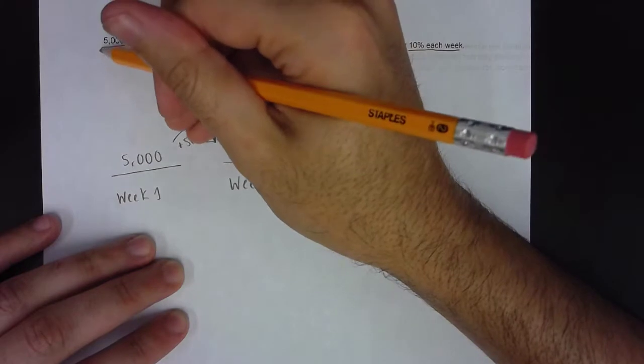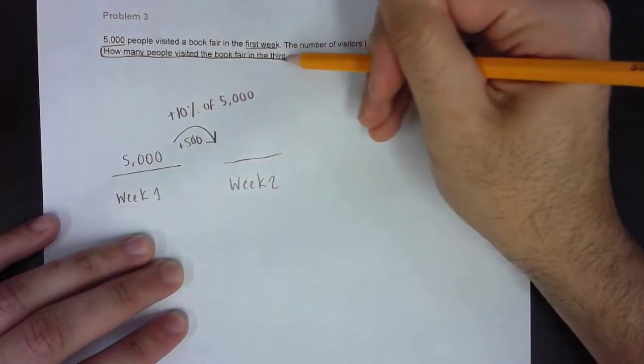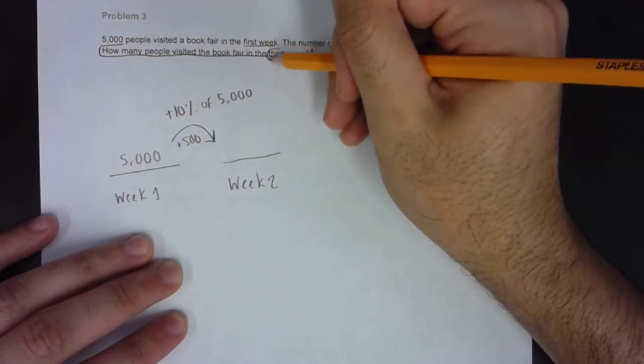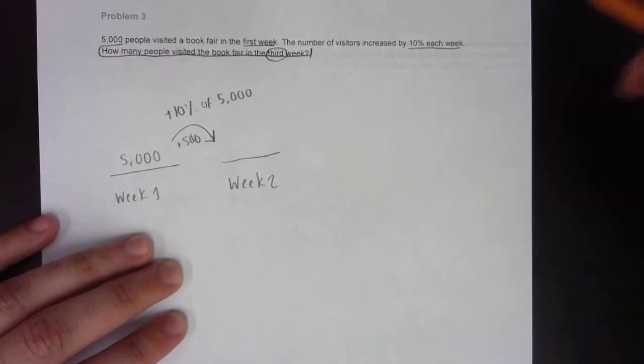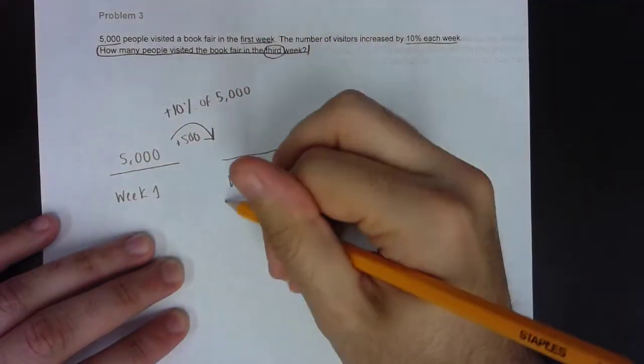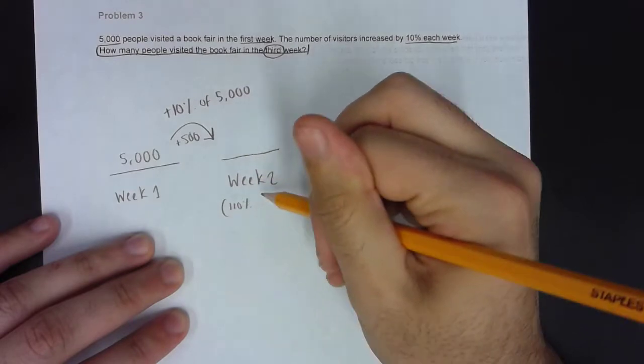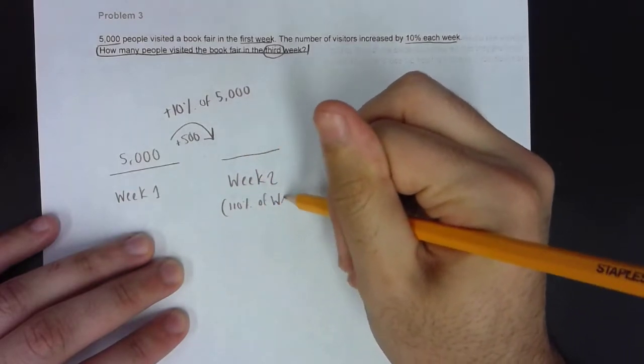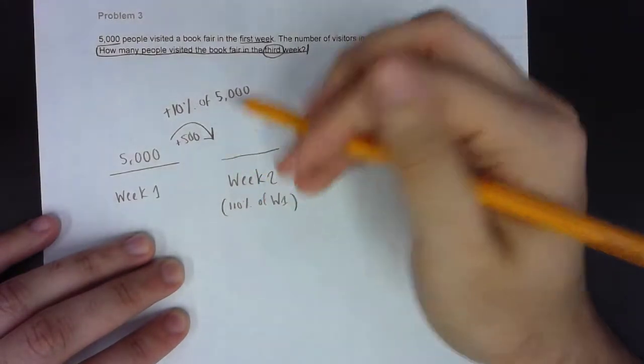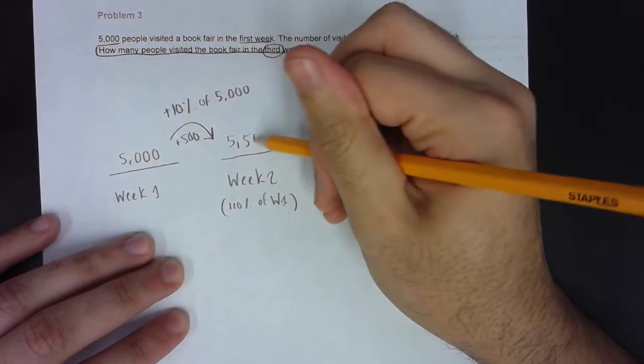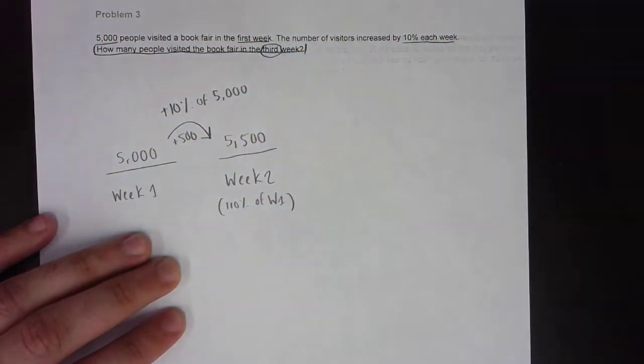The question asks, how many people visited the book fair in the third week? Third week is the one we're looking at. So week two, we know that there's a 10% increase from week one. This is 110% of week one. When you add the 500, you know that week two has 5,500 visitors.